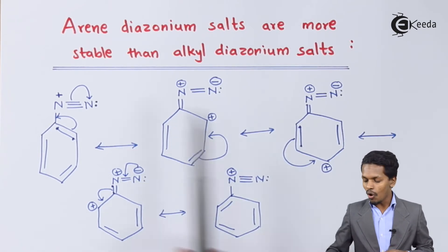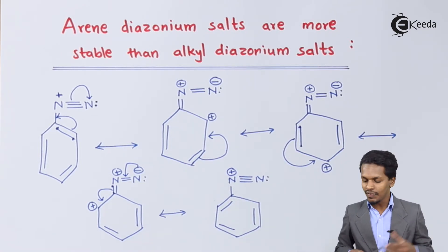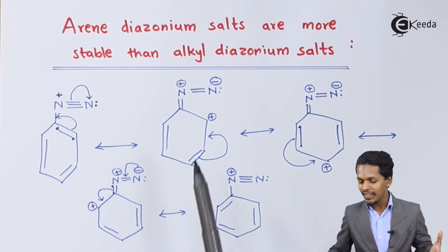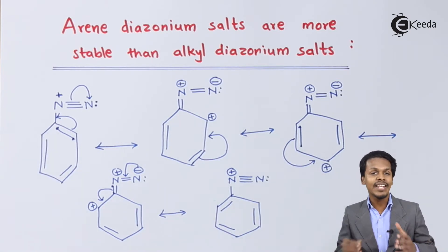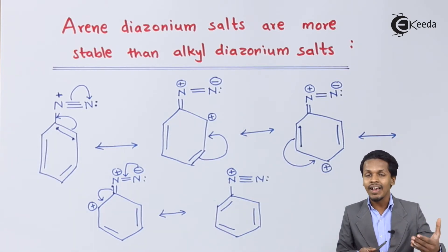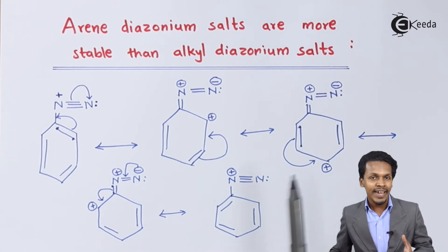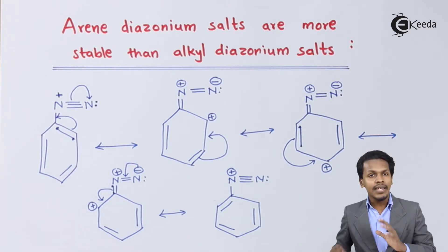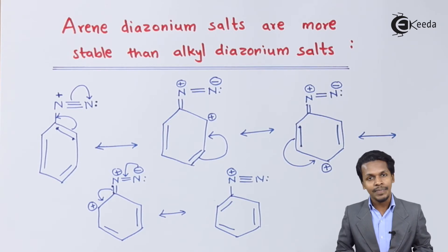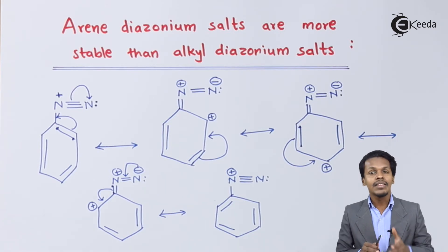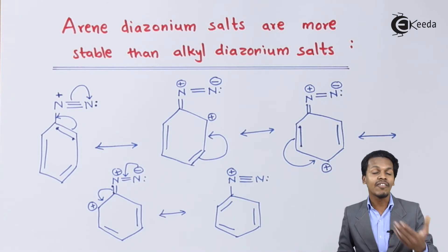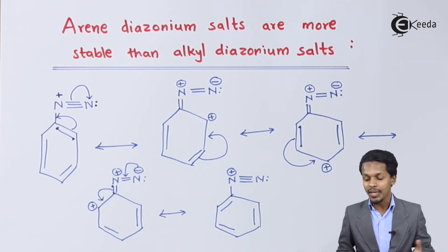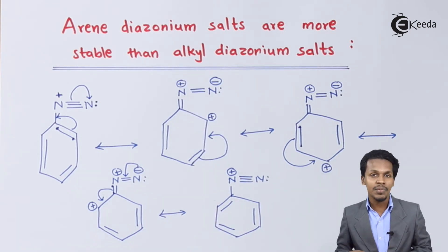So if you observe all these resonance structures, you will find that the electrons are delocalized, and thereby the positive charge is also delocalized on the carbon atoms, forming carbocations. That's the reason the whole molecule gets stabilized, and that is why arene diazonium salts are very much stable compared to alkyl diazonium salts.